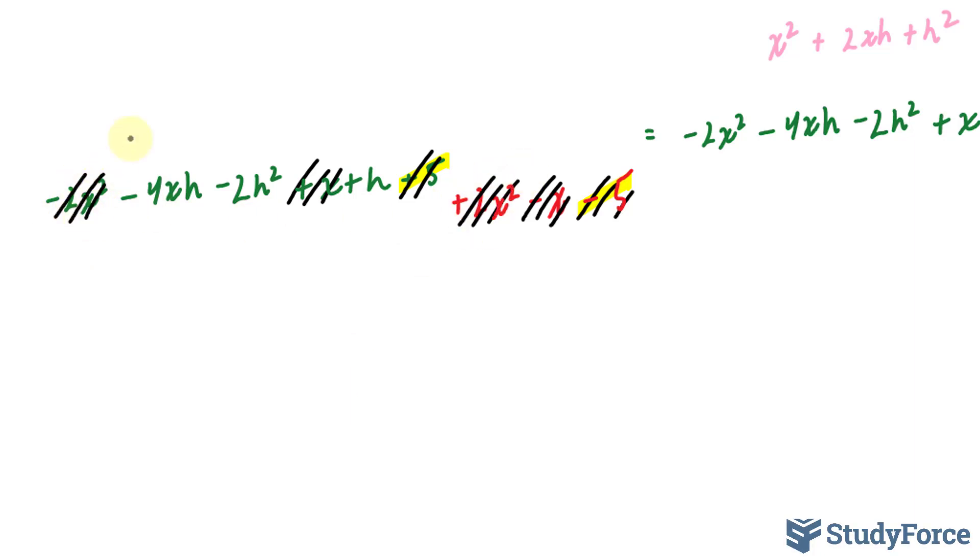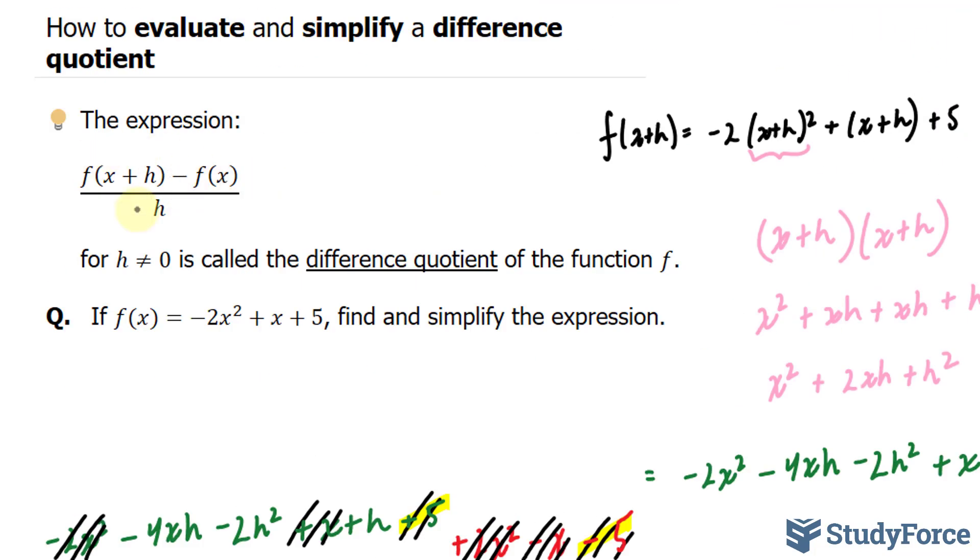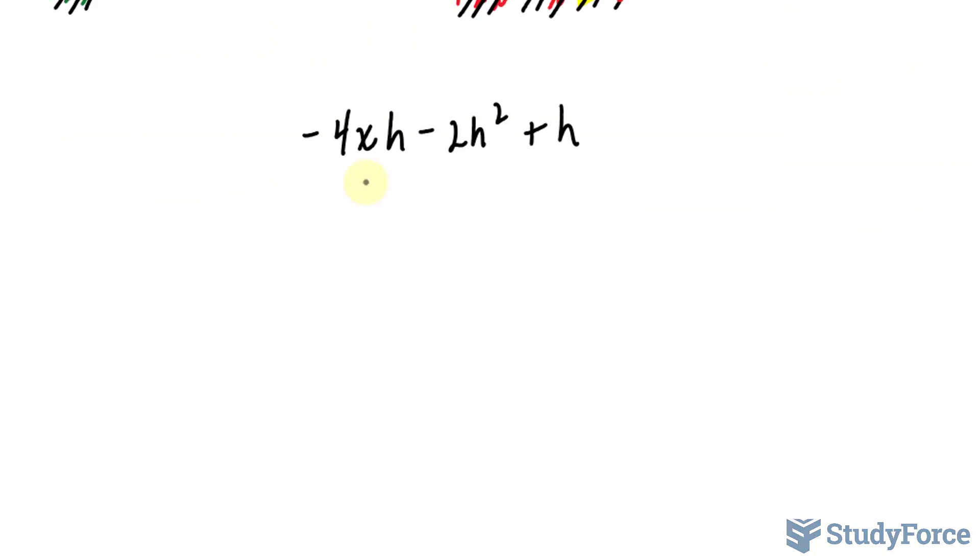And this leaves us with minus 4xh minus 2h squared plus h in the numerator position. This is all being divided by h.